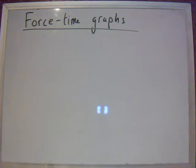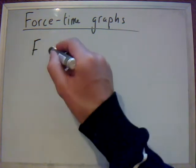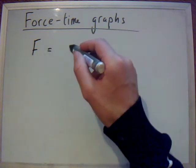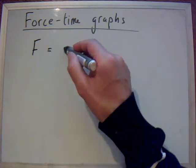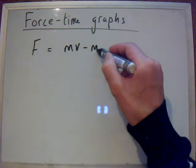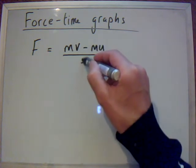Now, the force from Newton's second law equals rate of change of momentum which can be written as MV minus MU divided by T.